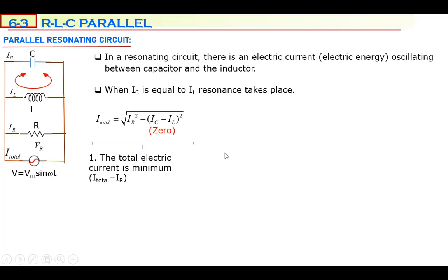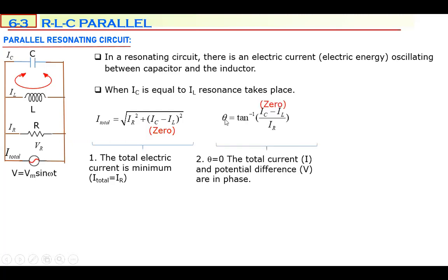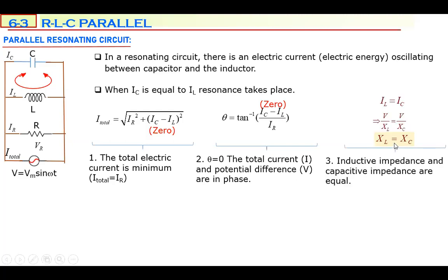According to the phase angle equation for parallel circuits, IC minus IL over IR gives the phase angle difference. Because these two are equal, their subtraction is zero, which means there is no phase difference between current and potential difference. Theta is zero. In all resonating circuits, theta is zero — this is the second important property of parallel resonating circuits.